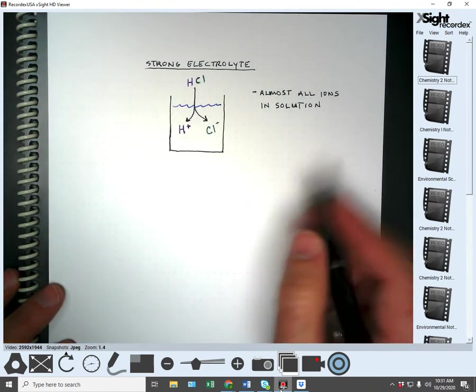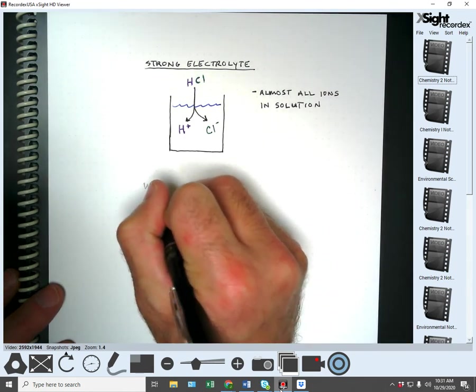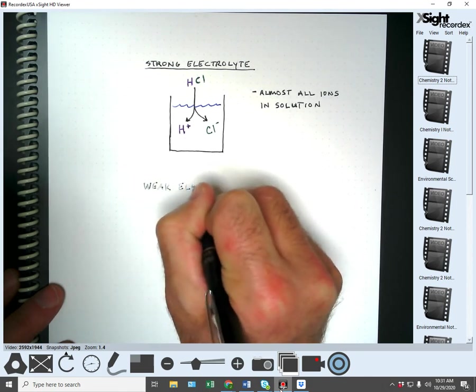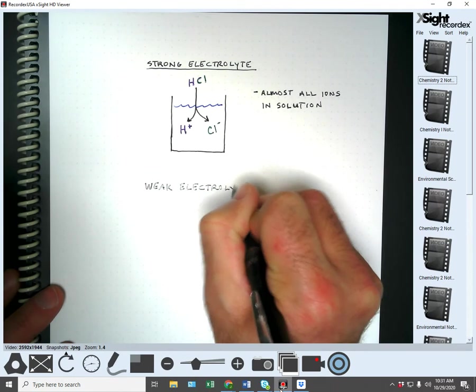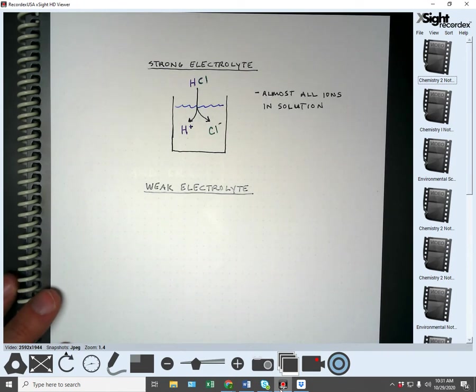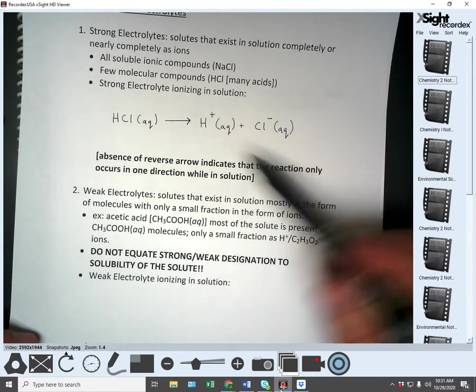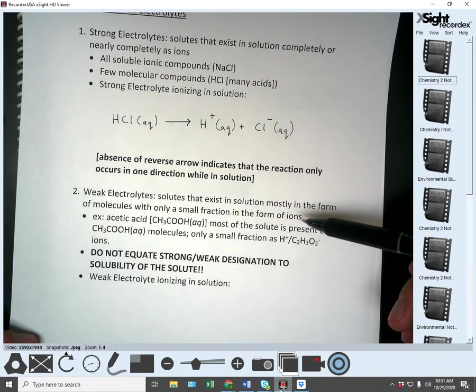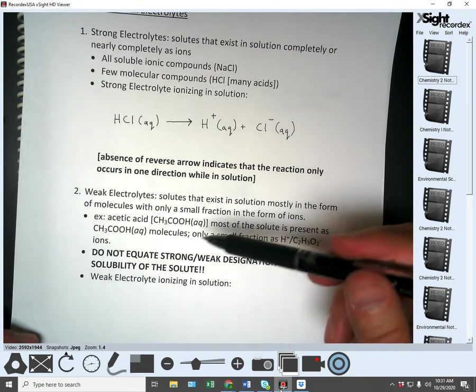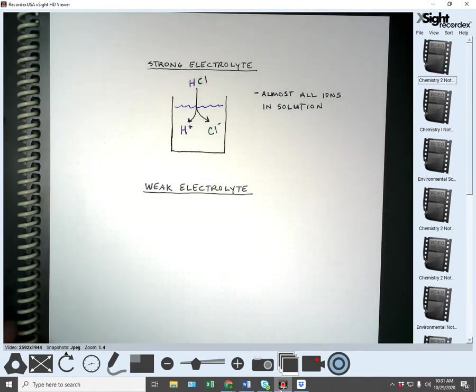A weak electrolyte are solutes that exist in solution mostly in the form of molecules with a small fraction in the form of ions. So for example, acetic acid. I'm going to write it the way that we normally write it, that like we used to write it in Chem 1.